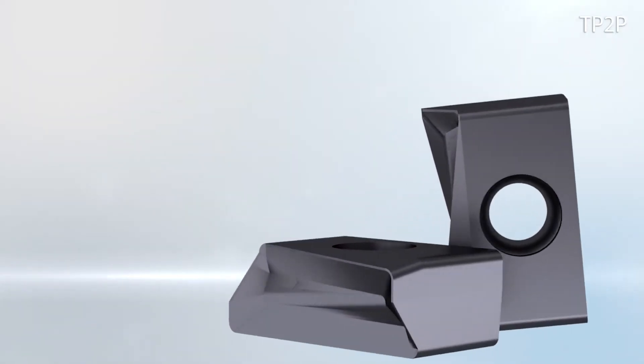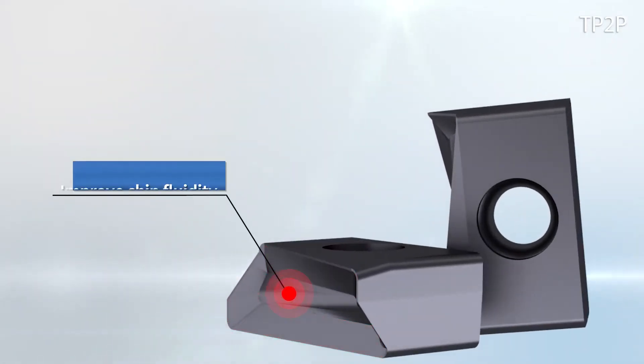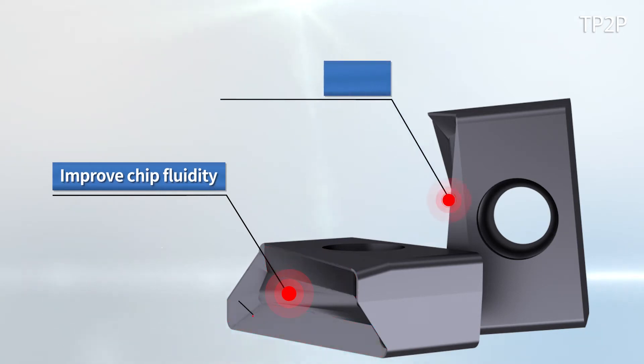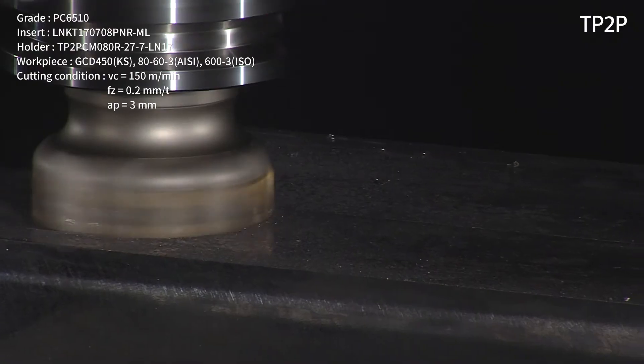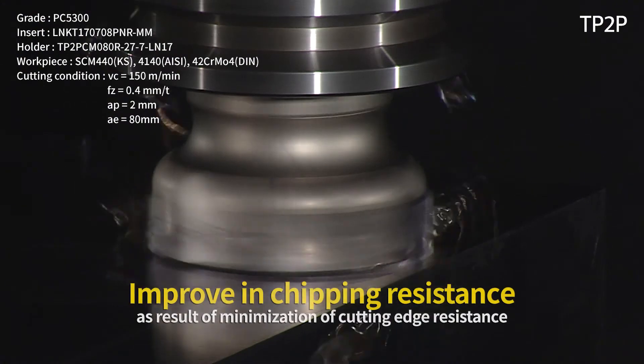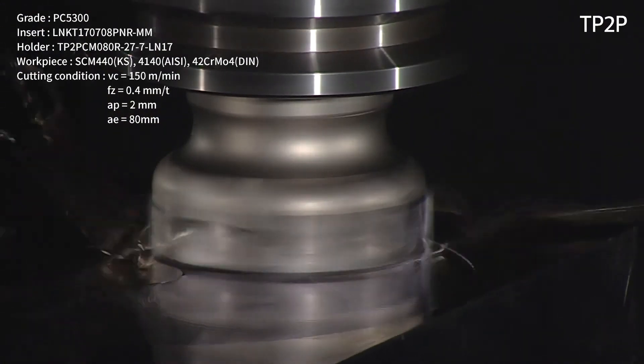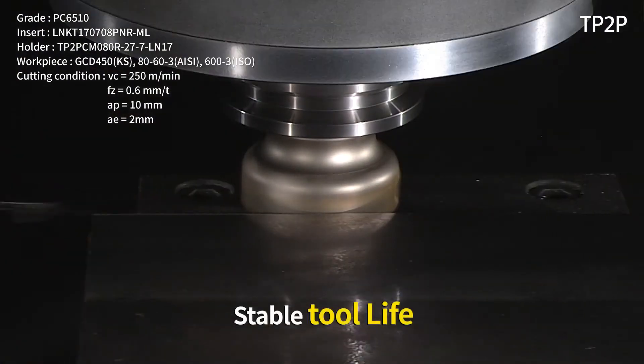TP2P's very own high-angle chip breaker has improved chip fluidity. The high helix cutting edge effectively reduced the cutting resistance, making machining more gentle. Moreover, resistance to chipping increased and a stable lifespan was secured due to minimized cutting resistance.